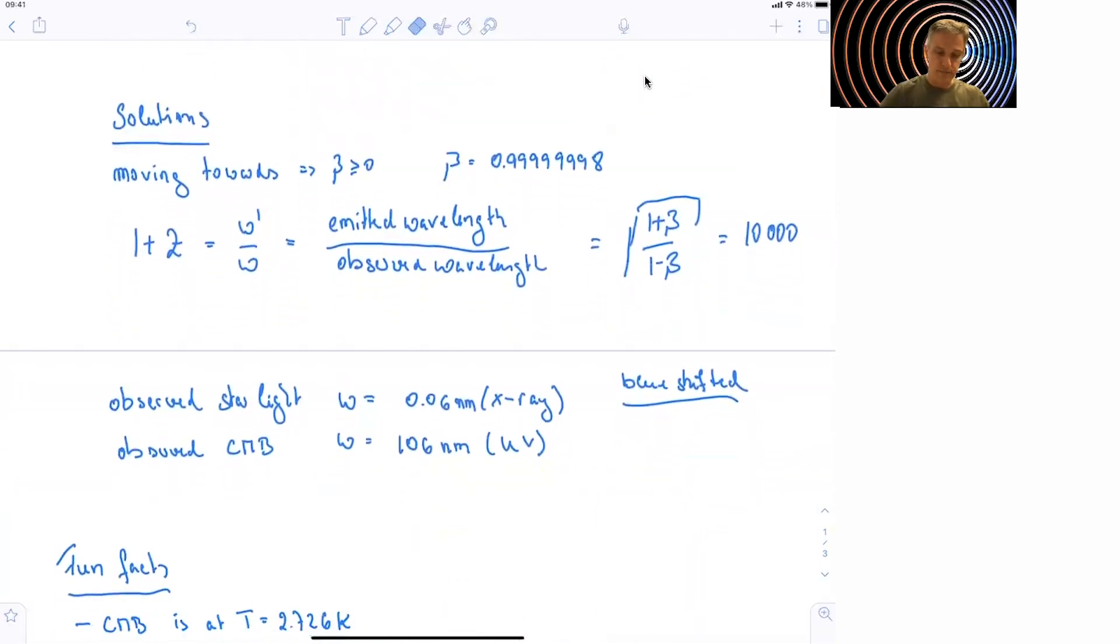So here's the solution. The light's moving towards us, so it's going to be blue shifted. The velocity is given here, and with beta, we have seen that redshift or 1 plus redshift is equal to the emitted wavelength divided by the observed wavelength. And you find that that factor is 10,000.